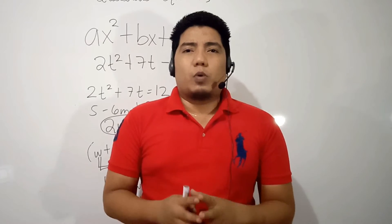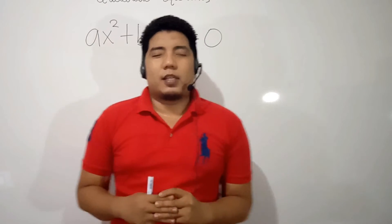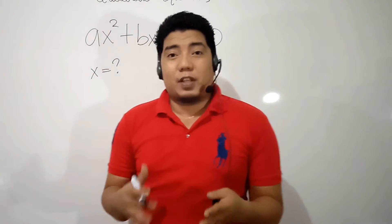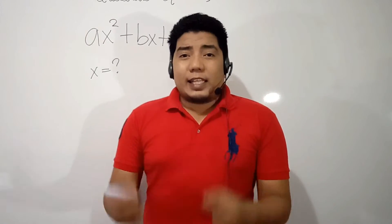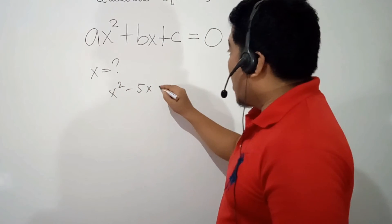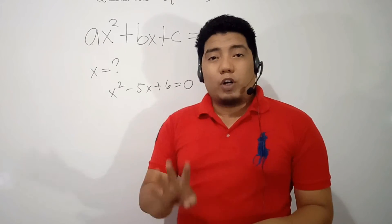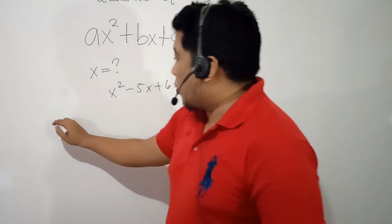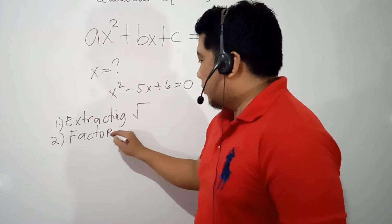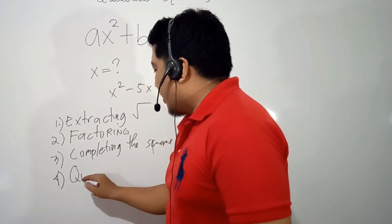What else do you need to know about solving quadratic equations? When solving quadratic equations, we are solving the value of x or the variable that satisfies the equation. There are at least 4 known methods: Number 1 is extracting square roots, Number 2 is factoring, Number 3 is completing the square, and Number 4 is using the quadratic formula. I will be making videos for each method.